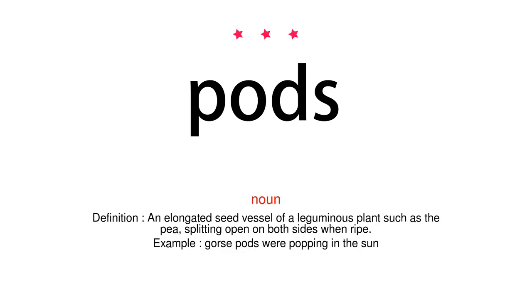Pods. Noun. Definition: An elongated seed vessel of a leguminous plant such as the pea, splitting open on both sides when ripe. Example: Gorse pods were popping in the sun.